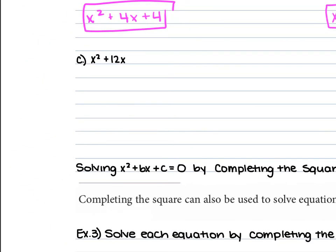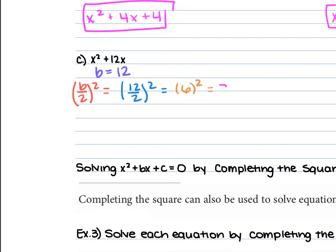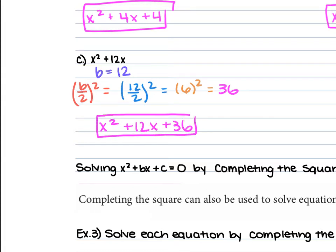For example c, we have x squared plus 12x. Our b is 12, so b over 2 squared gives us 12 over 2 squared. 12 over 2 is 6, and 6 squared is 36. So x squared plus 12x plus 36 is our perfect square trinomial.